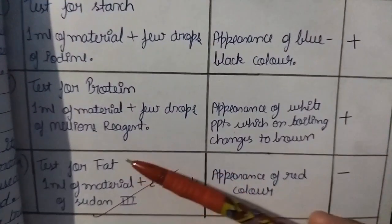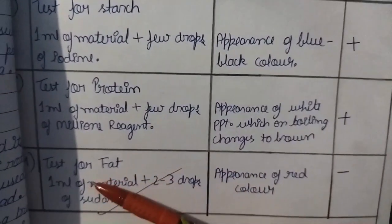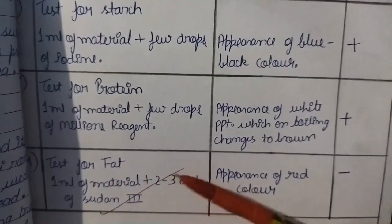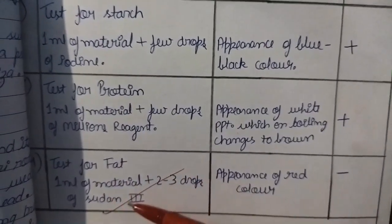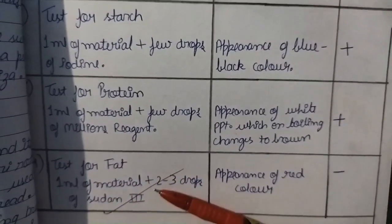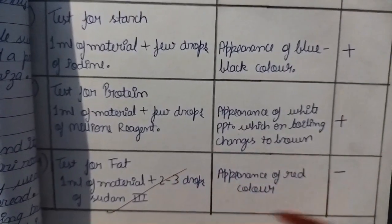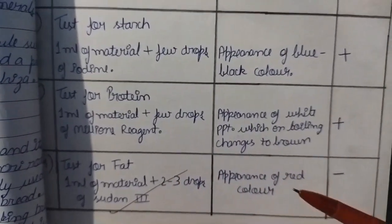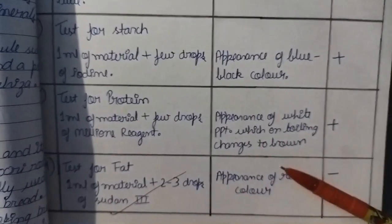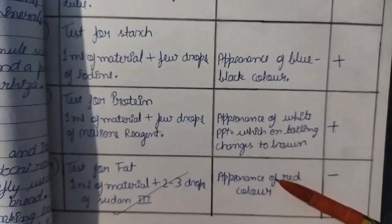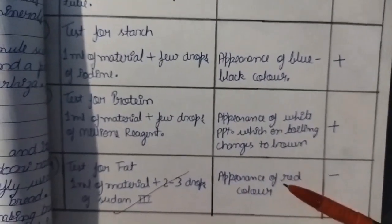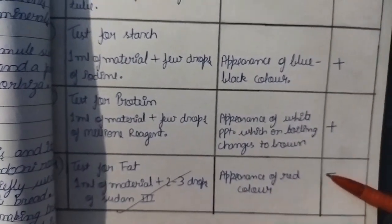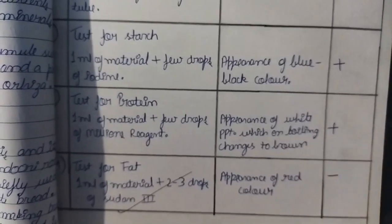For the test of fat, we take 1 ml of the required material and then add 2 to 3 drops of Sudan III. There will be a presence of red color, but as you know there will be a very small amount or no amount of fat, so it would be very rare to find it.